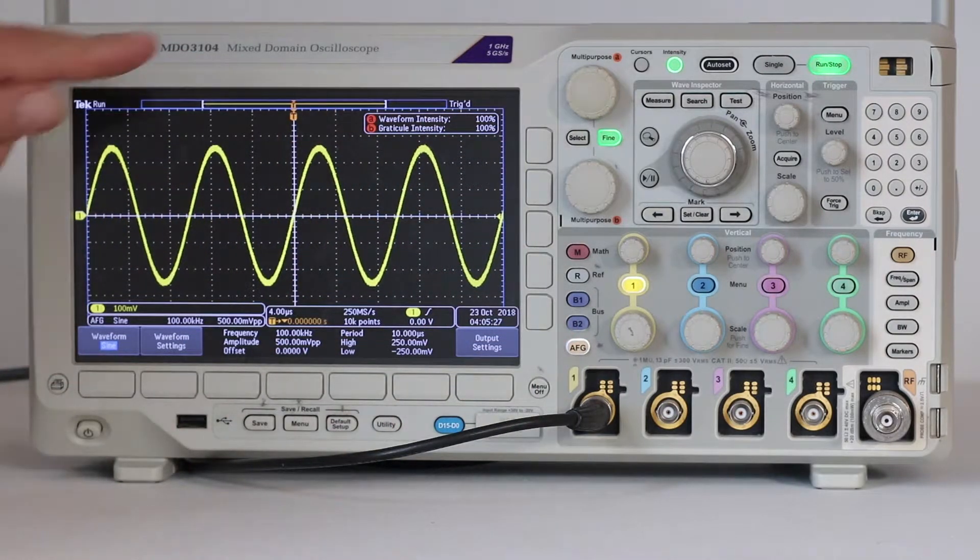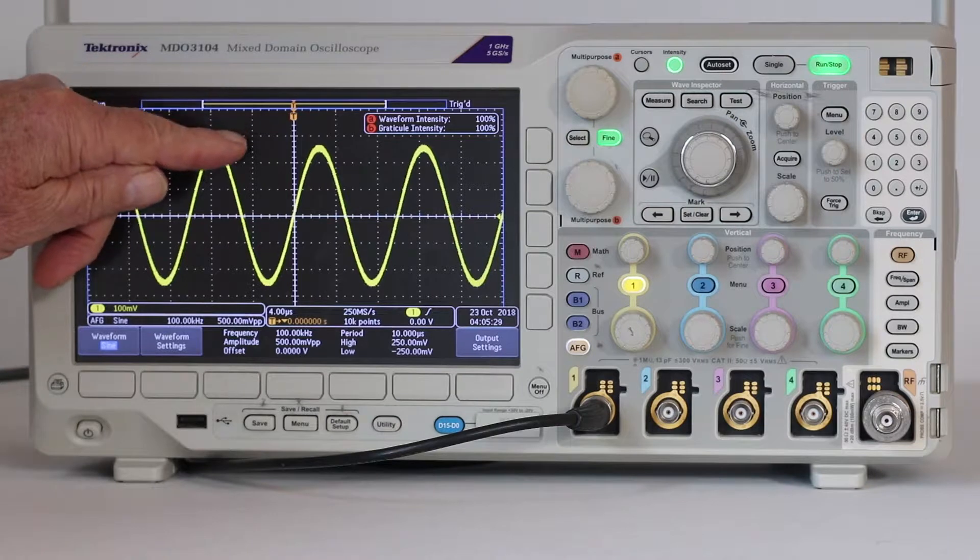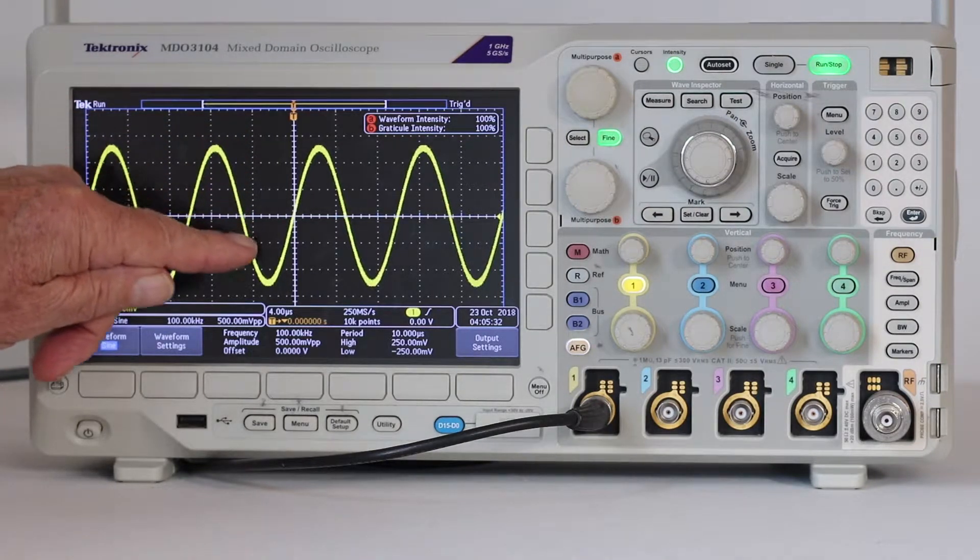The knobs relate to the y-axis, which defines the signal in terms of volts or power.